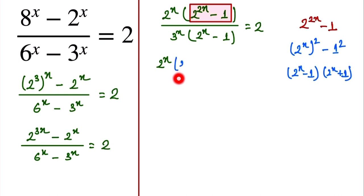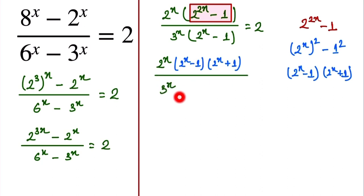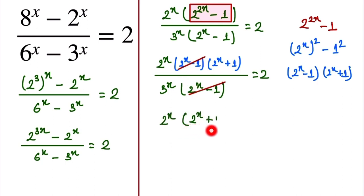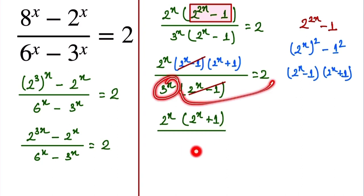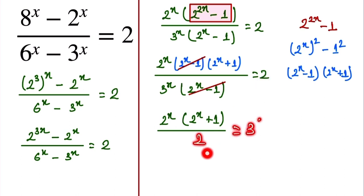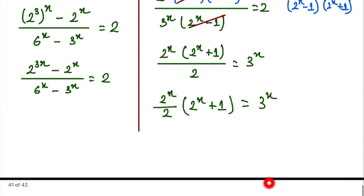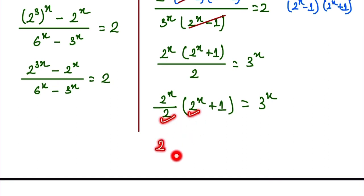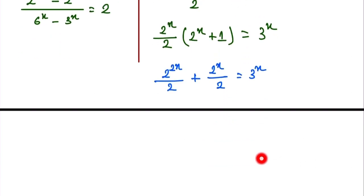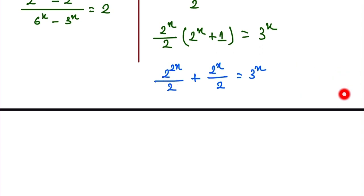We substitute this back: 2 to the power x times (2 to the power x minus 1)(2 to the power x plus 1), divided by 3 to the power x times (2 to the power x minus 1), equals 2. The factor (2 to the power x minus 1) cancels from numerator and denominator. So we are left with 2 to the power x times (2 to the power x plus 1) divided by 3 to the power x equals 2. This can be rewritten as 2 to the power x divided by 2, times (2 to the power x plus 1) equals 3 to the power x.